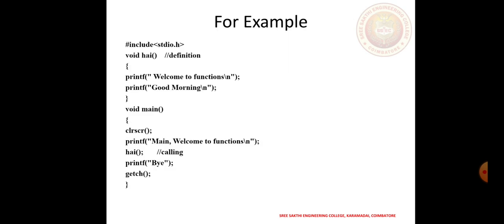This is one example. First is #include stdio.h, which is a header file. The next is void high — that is nothing but the function definition. Inside the function definition we have two statements: one is printf 'welcome function', another one is printf 'good morning'. Then the main function has void main, clrscr, then printf 'main welcome to function', then high — which is the function call. It is a function call because void high is my function definition, and the same name high is used here.